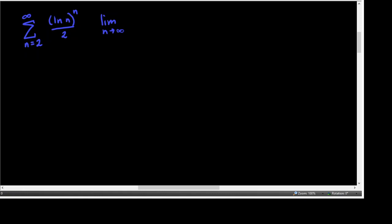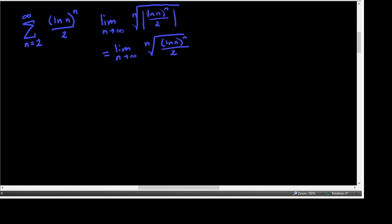So we're going to take the limit as n approaches infinity of the nth root of the absolute value of a sub n. The natural log of n when n is 2 or bigger is positive, and positive raised to a positive power divided by a positive is positive, so the absolute value here is not needed. If there were a negative 1 raised to a power of n, it would strip that away as we saw in another example. So the absolute value is superfluous, but it does remind me that I'm doing a test for absolute convergence.